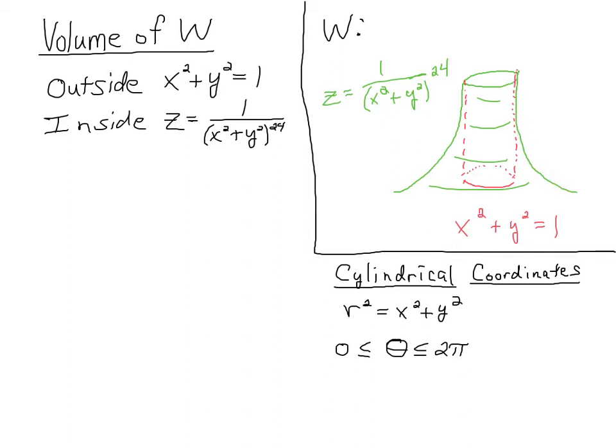this z equals 1 over x squared plus y squared to the 24th power. So that's this surface here. And then it intersects with this cylinder, x squared plus y squared equals 1. Now remember z is arbitrary. So this circle spans all the way up the z axis and then where they intersect, that's the top of the volcano.